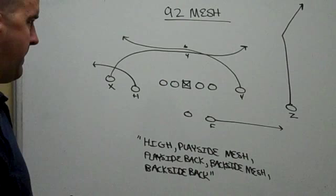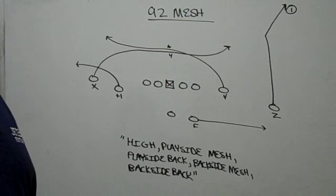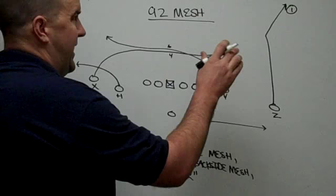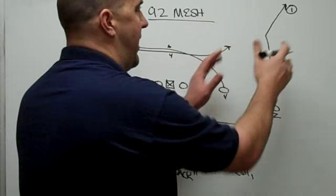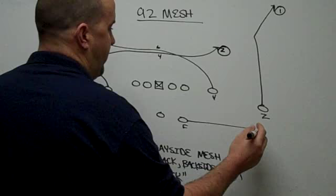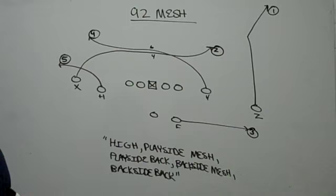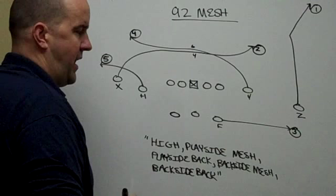Now let's talk about how these routes match up. It's easy to see that this corner route is the high route. Z always has the high route. When we talk about play side, we're talking about to the high route side. So this is the high route side because Z is to the right in this formation. So this is the play side mesh being run by X. This is the play side back. Y is the back side mesh, and H is the back side back. And we consider H to be the back because many times in our offense H will line up in the backfield.